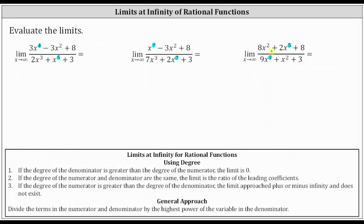Now let's take a look at our notes. If the degree of the denominator is greater than the degree of the numerator, the limit is zero. For the first limit, the degree of the denominator is five, which is greater than the degree of the numerator, which is four. Therefore the limit is equal to zero. This is because the denominator, which has a higher degree, is growing faster than the numerator as x approaches infinity, and therefore the values approach zero.